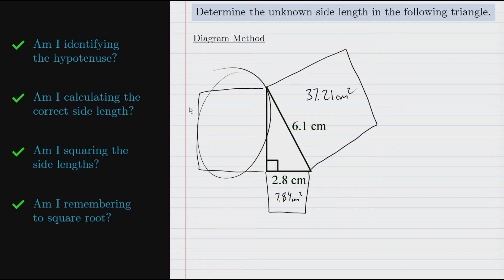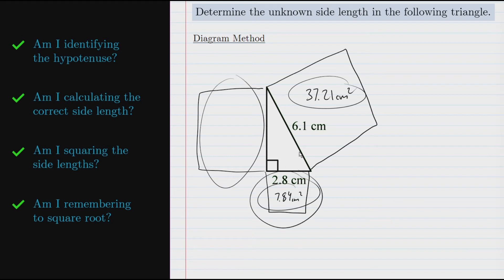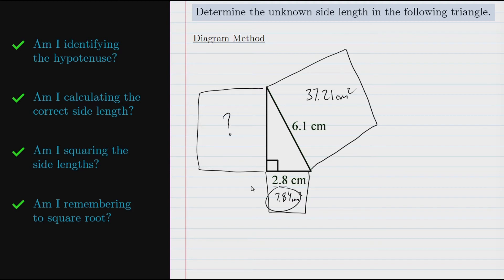So we've taken care of squaring the side lengths. Now we need to find the area of this remaining square. Often I see students take these two values and add them together to get the area of this square — but that would only be true if this square were based on the hypotenuse of the triangle, and it's not. This goes back to the second check: am I calculating the correct side length? Remember, the two small areas add up to the hypotenuse square area. So what we really need to find is what number plus 7.84 gives us 37.21. We calculate that by doing 37.21 minus 7.84, which gives us 29.37. If we're finding the hypotenuse, we add two areas; but if we're finding a side that's not the hypotenuse, we subtract.